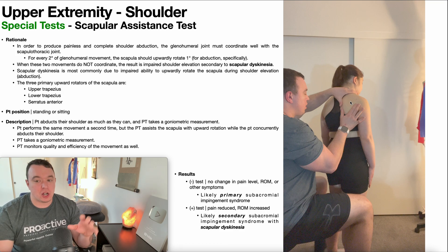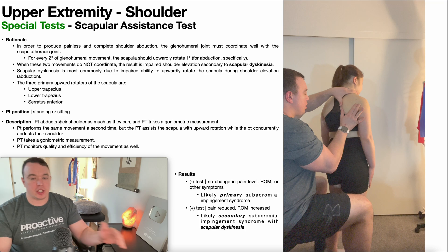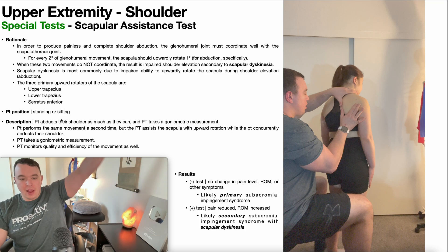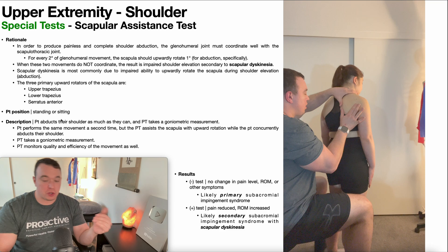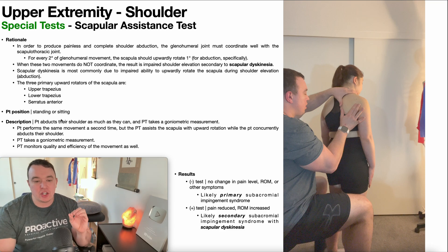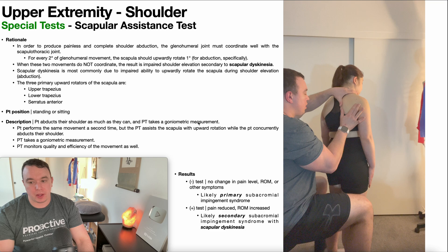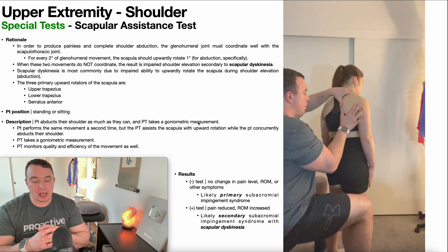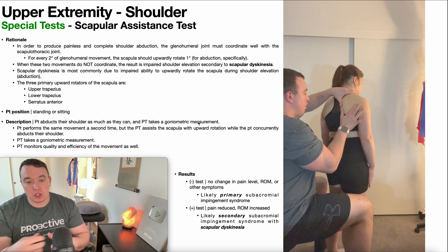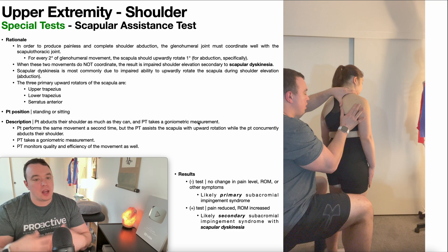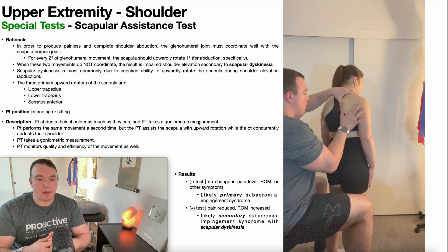The first part of this test is not shown in the video, but basically you're going to have the patient abduct their shoulder as much as they can — so go through abduction, active range of motion. You can eyeball it, but it's preferable if you can take a goniometric measurement to get an exact range of motion for that abduction. If you're using a goniometer, you're probably going to need someone else — an aide or a student — to take the measurement on the second part.